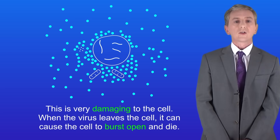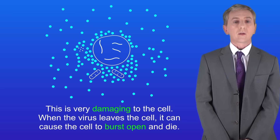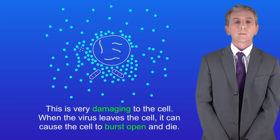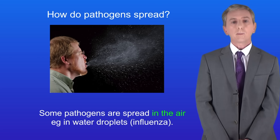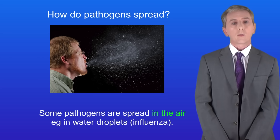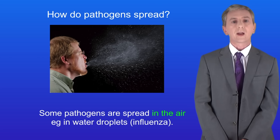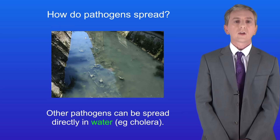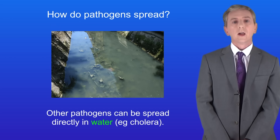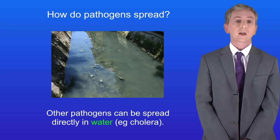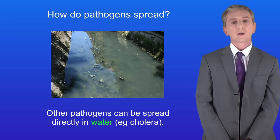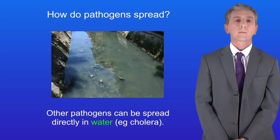Pathogens are usually spread in three ways. Firstly, some pathogens are spread in the air, for example in water droplets — a good example of that is influenza. Other pathogens can be spread directly in water, for example cholera, which spreads when drinking water is polluted by sewage.